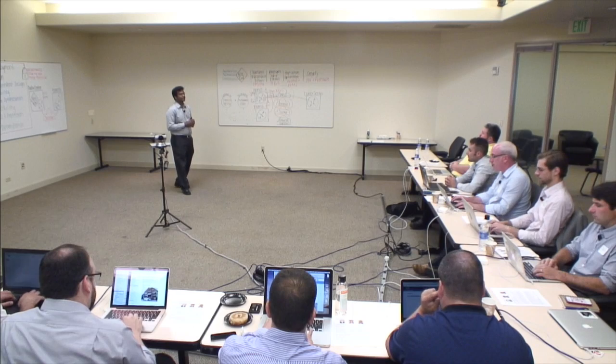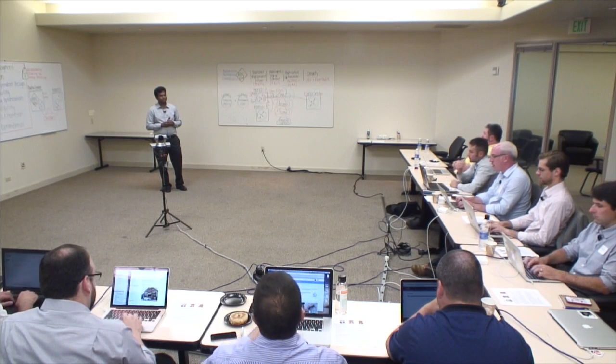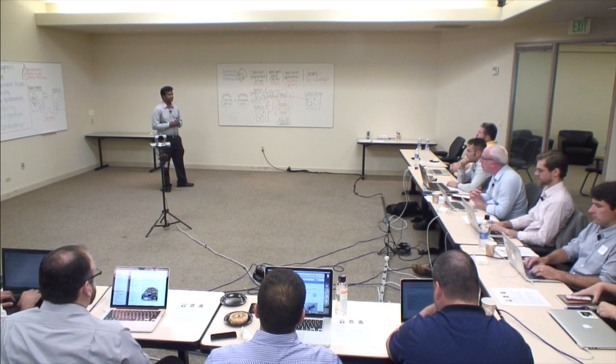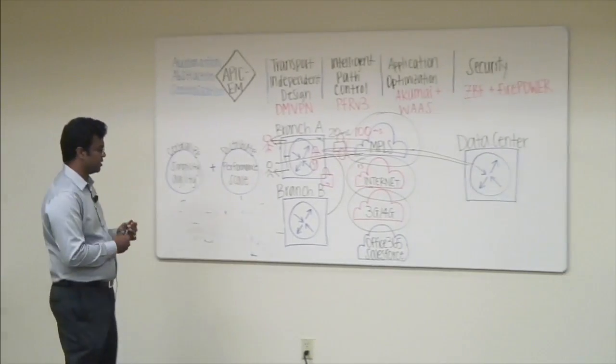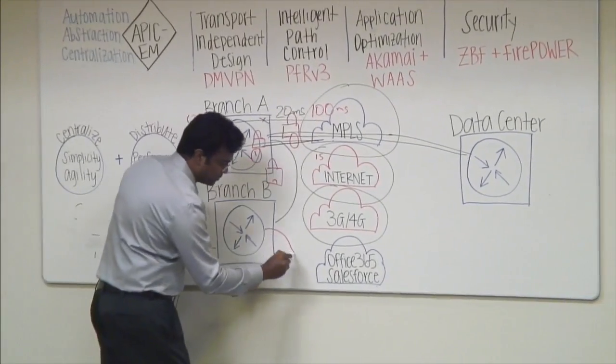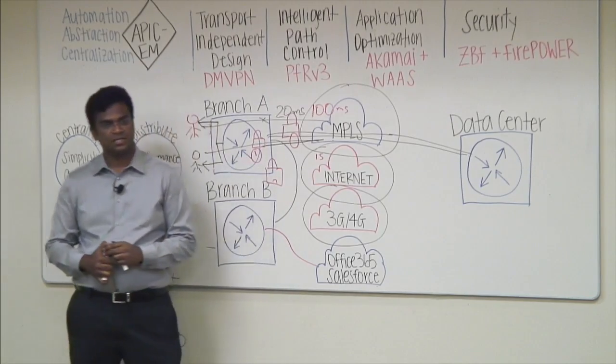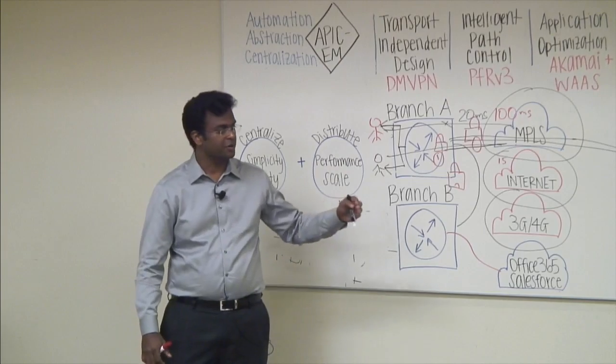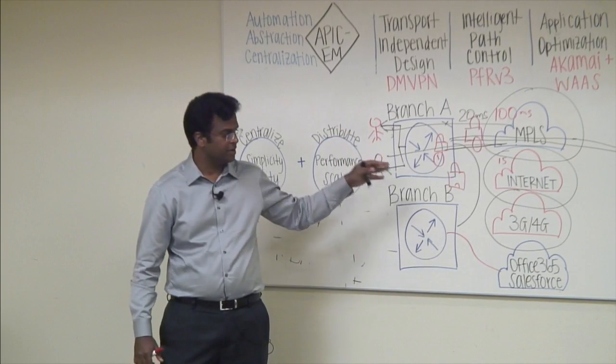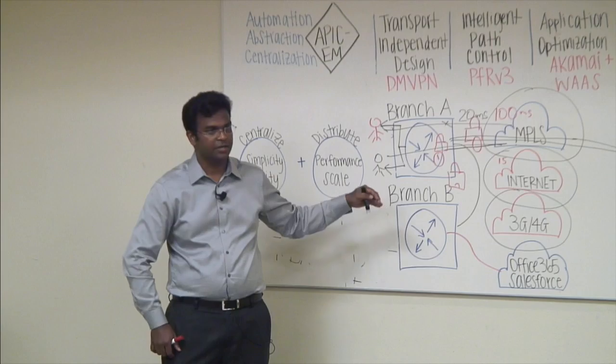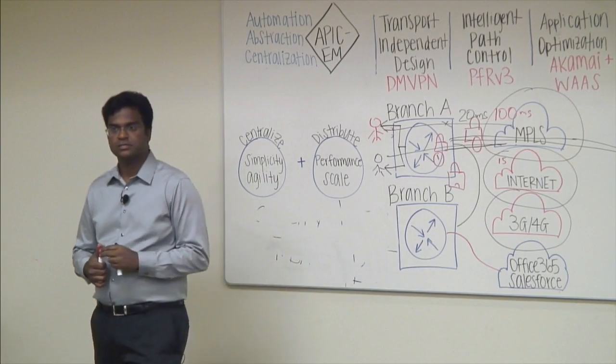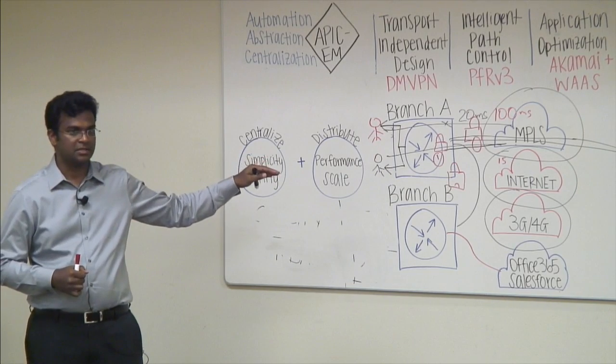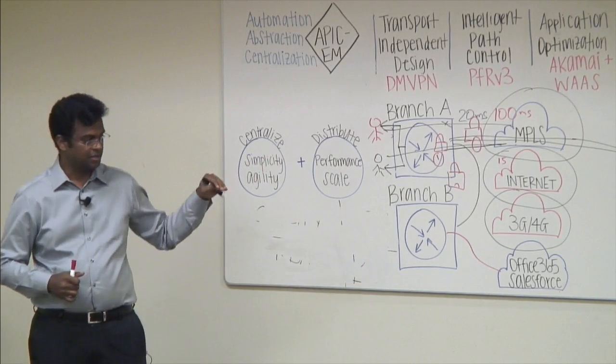The fourth and final one is system level security. If you're doing advanced techniques like direct internet access for Office 365 and Salesforce, you want to break out from your local branch. For some branches, you want to break out for Office 365. It makes sense because you don't want to access the Office 365 server in New York when you're in California. You want to access the server locally. Two reasons: one, performance, and two, saving on bandwidth capacity. You'll save bandwidth if you break out locally.